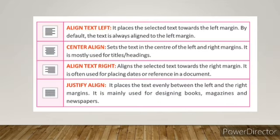The four types of alignment are: align text left, center alignment, align text right, and justified alignment. To align your text to the left of the margin, press left alignment. To align the text in the middle of the document, press center alignment. To align your text to the right side, press align right. And if you want to set the margins between the left and right, select justified alignment.